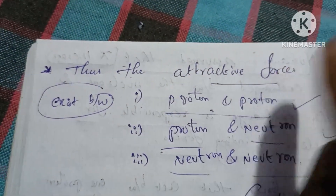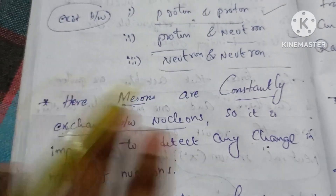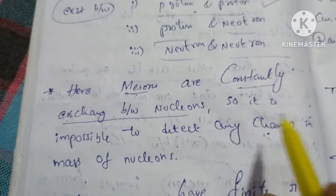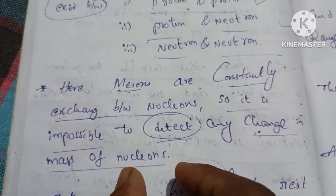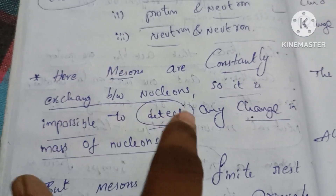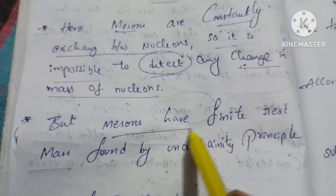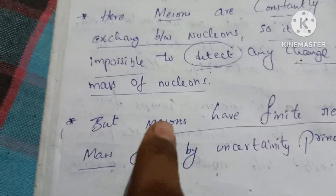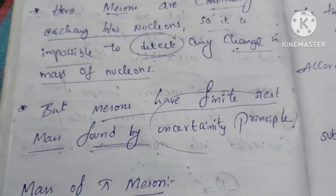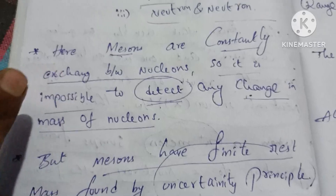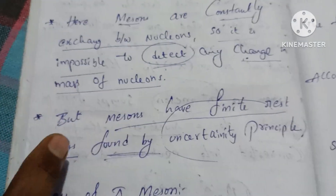It is impossible to detect any change in mass of nucleons during meson exchange. However, if mesons have finite rest mass, their mass can be found using the uncertainty principle.